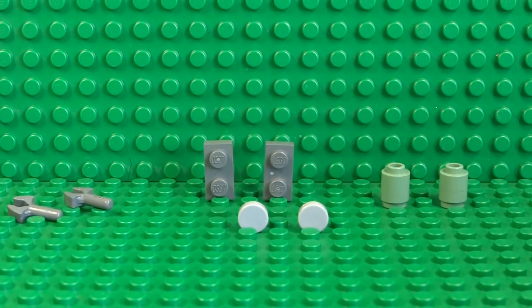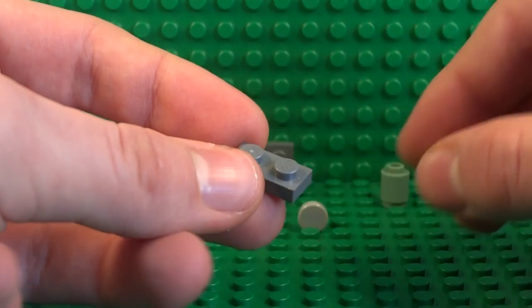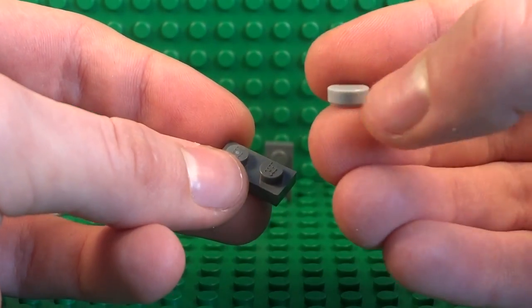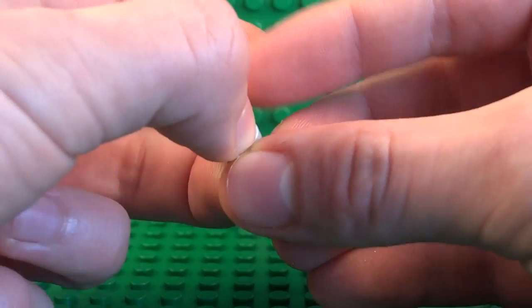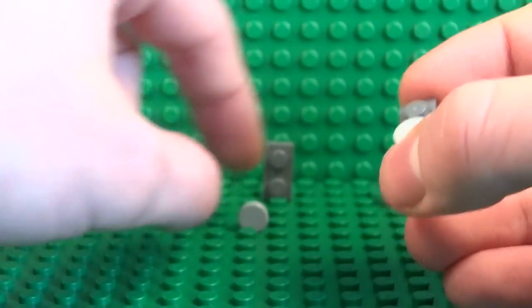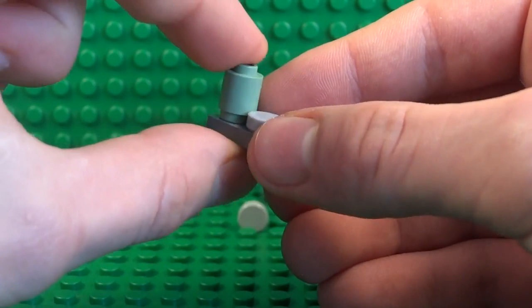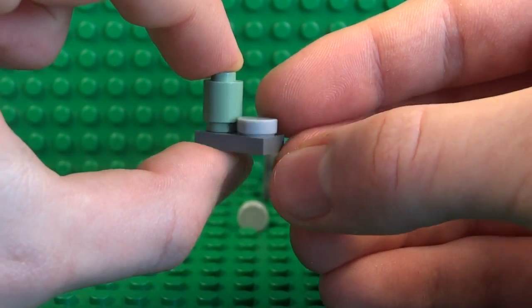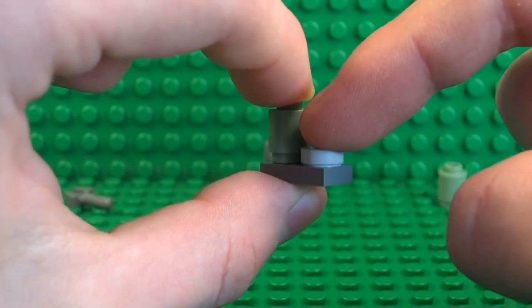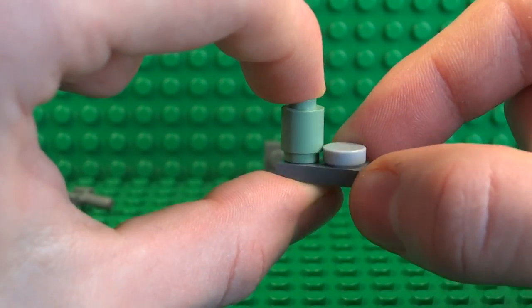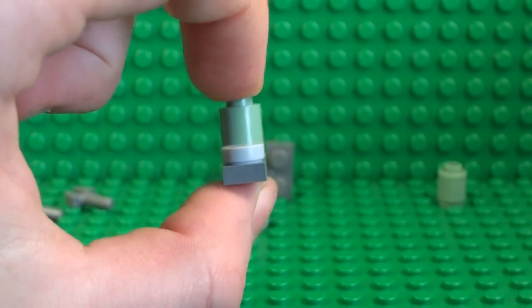And to build both the legs it's pretty simple. Just take a 1x2 plate and a round 1x1 tile, just stick that on there. And then for the leg itself just use a 1x1 tube piece.